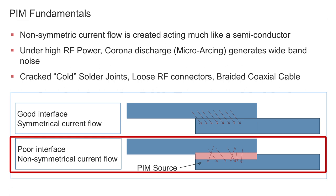In this case, we talk about a non-linear transmission system. Another example is at the assembling of a feeder connector. If the cable is not prepared in the correct way and parts of the dielectric are clamped between the cable's outer contact and the connector's outer contact, this will result in PIM too.